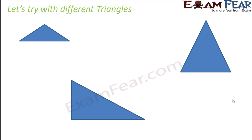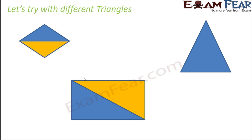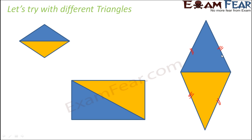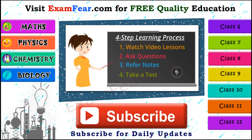On screen you can see three different types of triangles: a right-angle triangle, a scalene triangle, and an isosceles triangle. For each, its mirror image combined with the original forms a parallelogram — opposite sides are equal and parallel. So since every triangle and its mirror image make a parallelogram, the formula half times base times height holds true for all types of triangles.